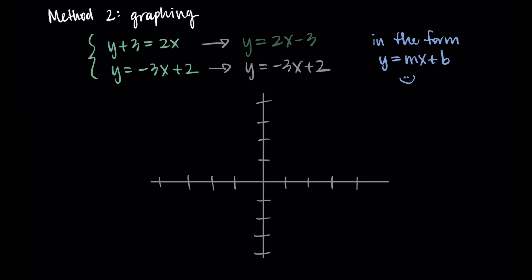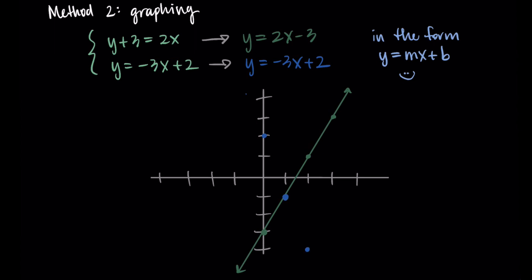Now I can graph these. Two X minus three has an intercept at negative three, and our slope is up two over one. Then for the second equation, we're at a vertical intercept of two, and then we do minus three over one. When we do this, we can see that the two lines intersect at our point one negative one, and that was the answer we got with the first method using the symbolic substitution. This means that the lines intersect at this point, which matches our answer we found in the other method.